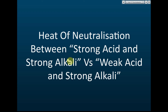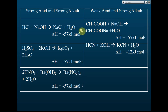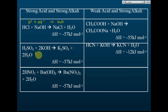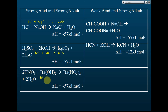We're comparing the heat of neutralization between strong acid and strong alkali versus weak acid and strong alkali. We can see that the heat of neutralizations of strong acids are the same — 57 kilojoules per mole. Strong acid and strong alkali is always the same. This is reasonable because the reaction is always the same: hydrogen ions react with hydroxide ions to produce water. For one mole of water produced, 57 kilojoules is released.